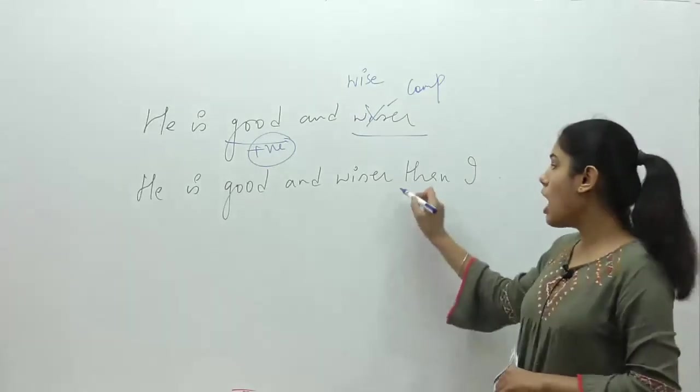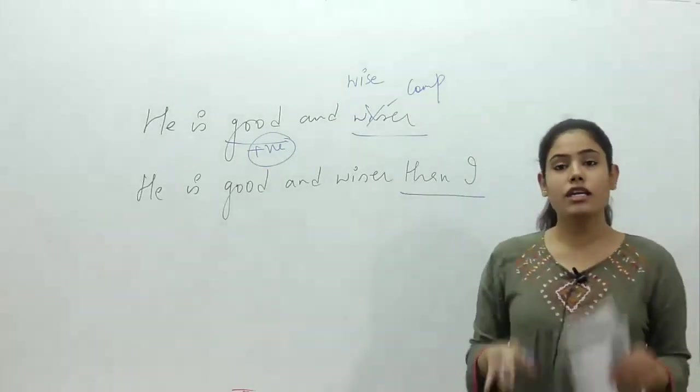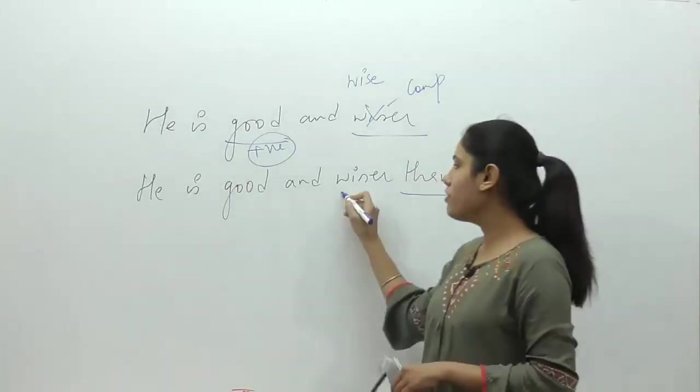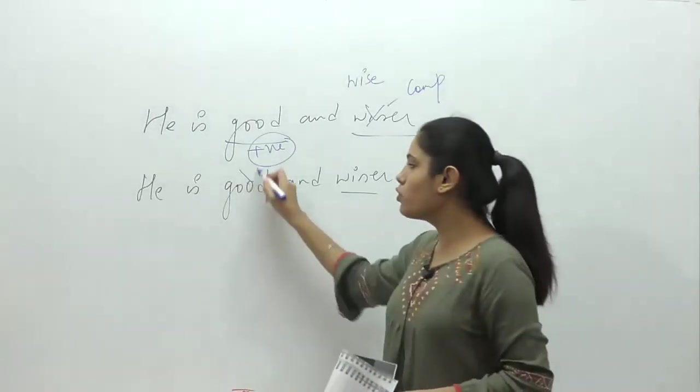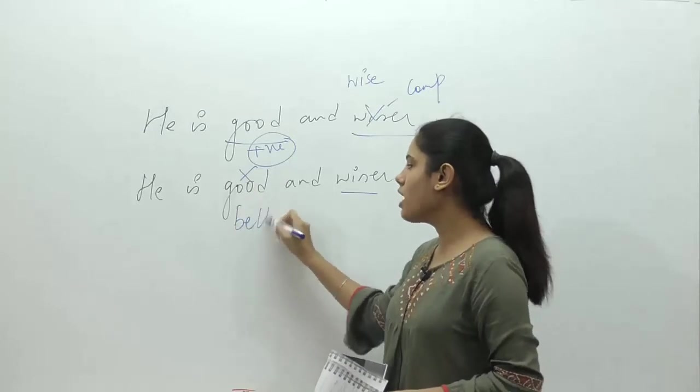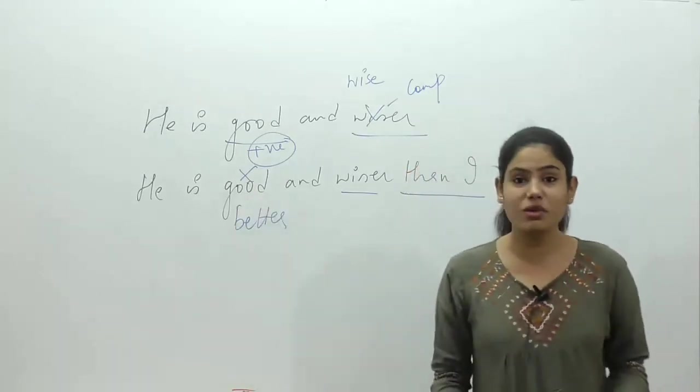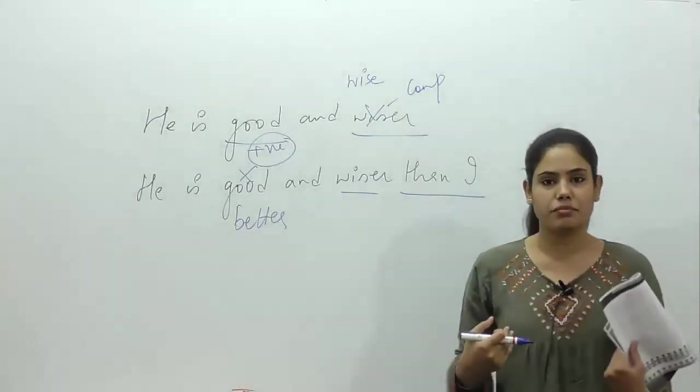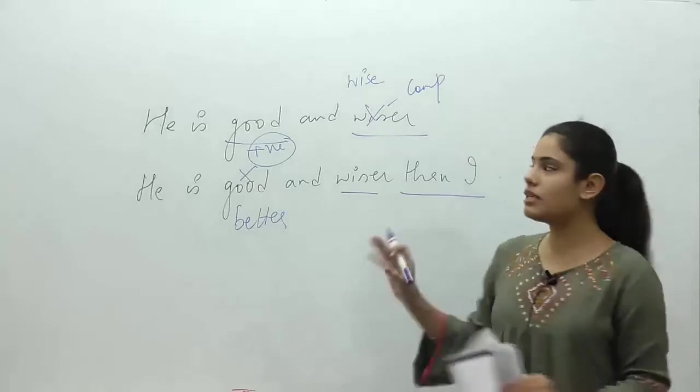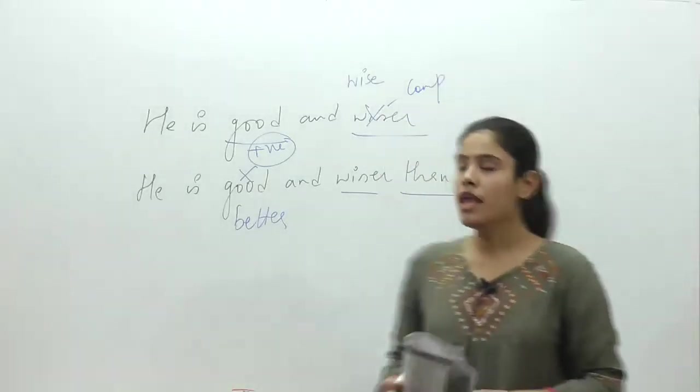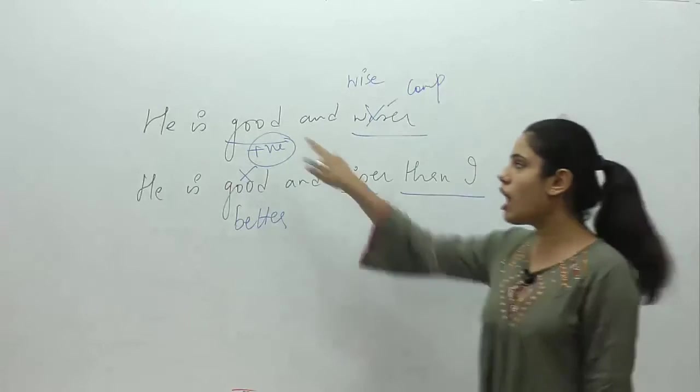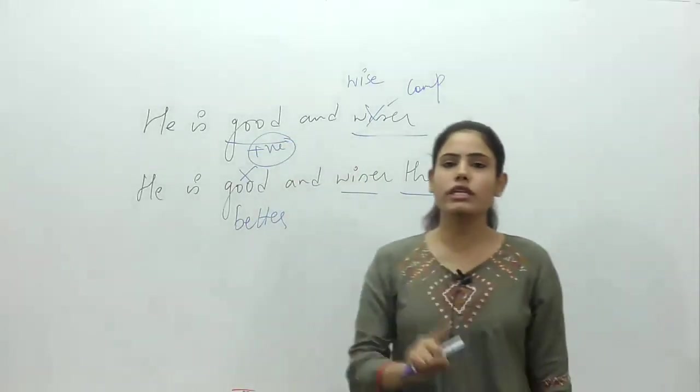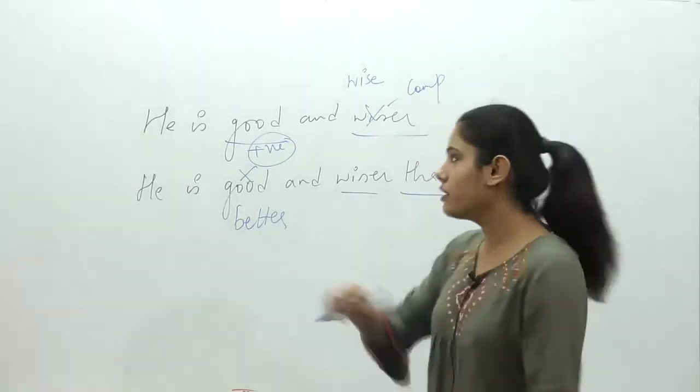I guess a lot of people have judged it. The correct sentence is: He is good and wise. But in the second sentence, if you see, we are comparing. Now that we are comparing, we have to use comparative degree. We have to write wiser, but we cannot write good. What should I write? Better. Because good becomes better. So: He is better and wiser than I.